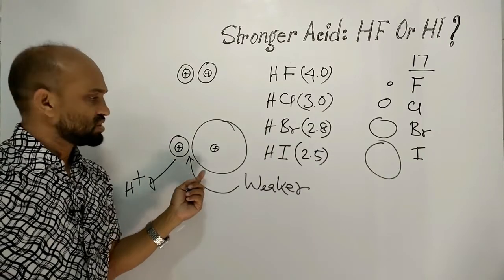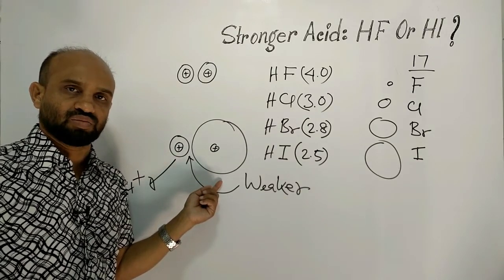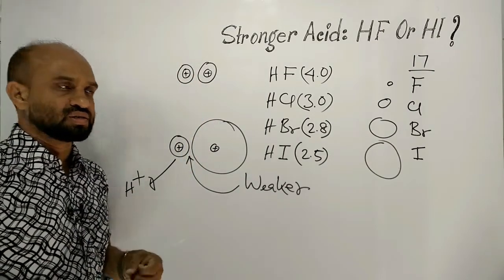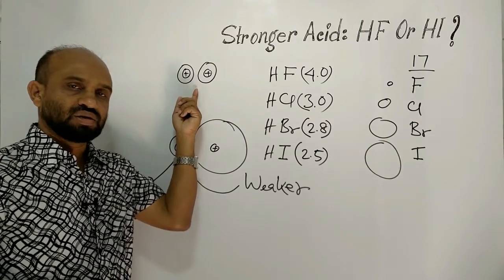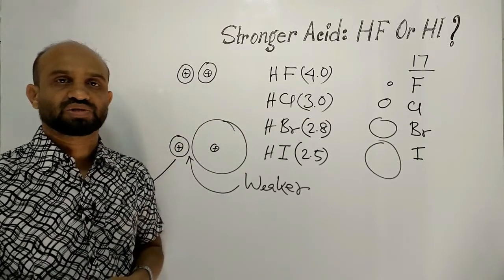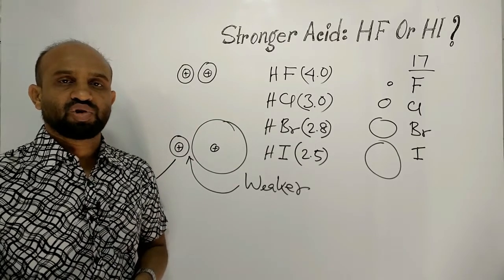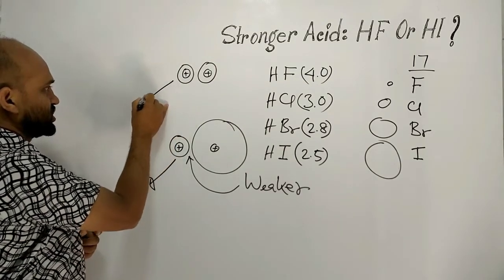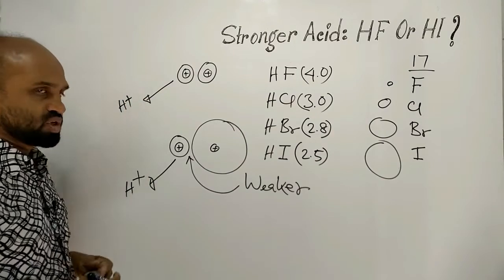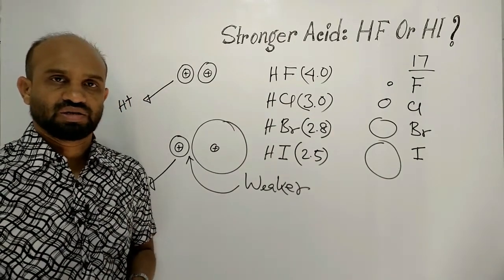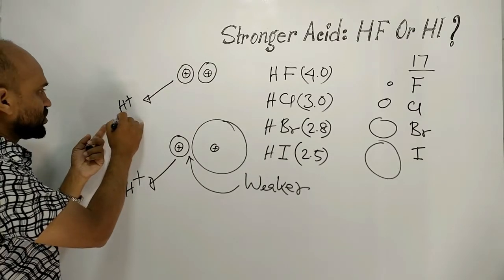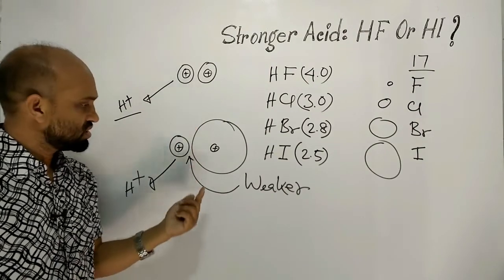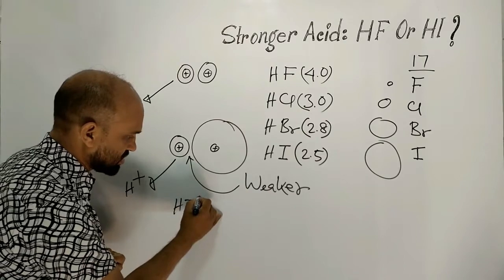The reason is the bigger size of the iodine atom. But in the case of hydrofluoric acid, fluorine is smaller in size, and as a result, the bond between hydrogen and fluorine becomes shorter. Shorter bonds are stable bonds, and for this reason, from hydrofluoric acid, a proton is produced but not easily. Therefore, hydrofluoric acid is a weak acid and hydroiodic acid is a stronger acid.